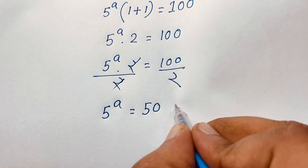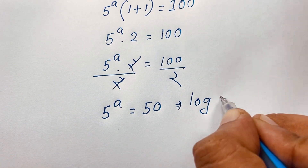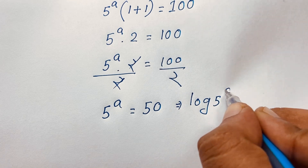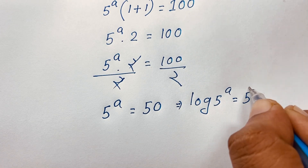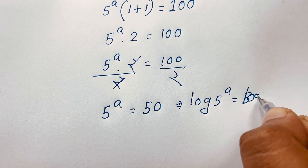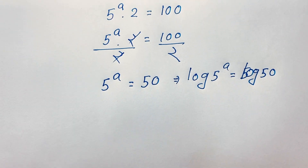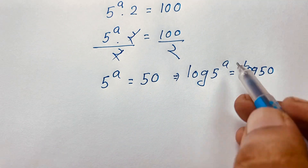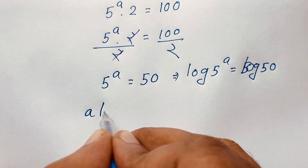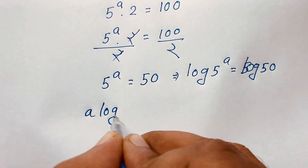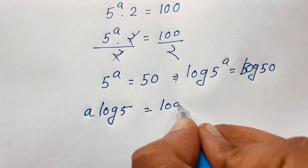Now I apply log to both sides. So log 5 to the power a is equal to log 50. Now, according to the logarithm rules, the exponent moves in front, so it will be a times log 5 is equal to log 50.